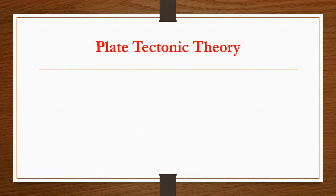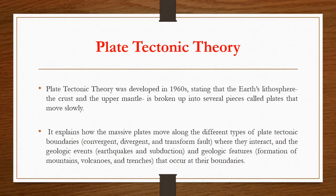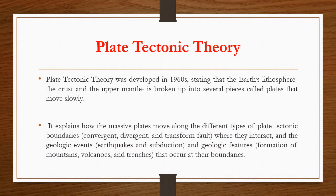Next is the plate tectonic theory. This theory has been discussed in previous modules. Plate tectonic theory was developed in 1960, stating that the Earth's lithosphere — the crust and the upper mantle — is broken up into several pieces called plates that move slowly. It explains how these massive plates move along different types of plate tectonic boundaries where they interact, and the geologic events and features that occur at their boundaries.